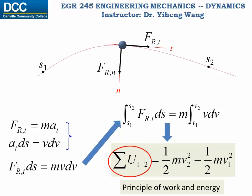You might ask: what happened to the force along the normal direction? Since work is defined as the magnitude of the force multiplied by the displacement along its direction, and since the normal force is always perpendicular to the path, there is never displacement along the direction of the normal force. Therefore, the normal force never does work. The summation on the left-hand side of this equation is the total work done by all external forces during the process from position one to position two.